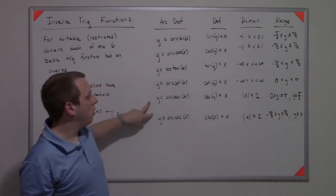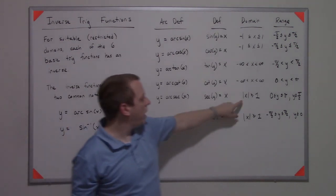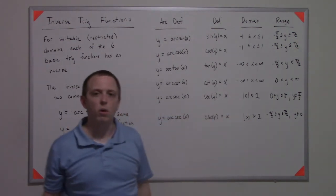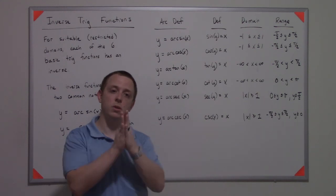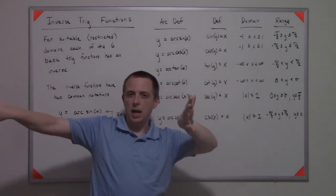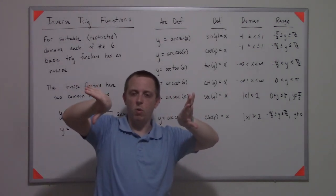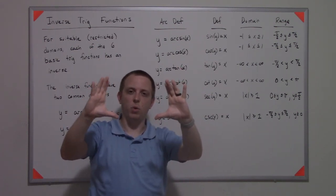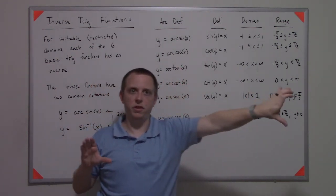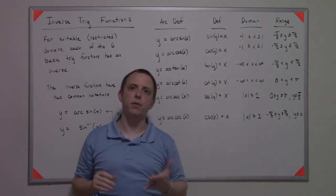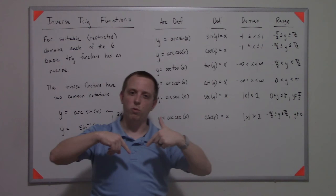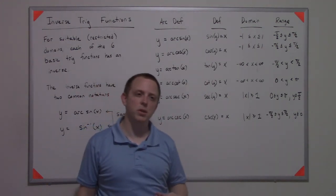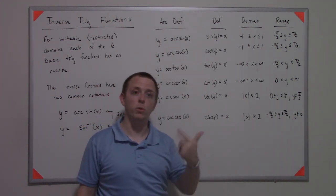Arc secant and arc cosecant - their domains are interesting. They're from negative infinity all the way to negative one, and then you pause in negative one to one, and then you take one to infinity. If you were to look at the graph of secant, you would see that's how it works.